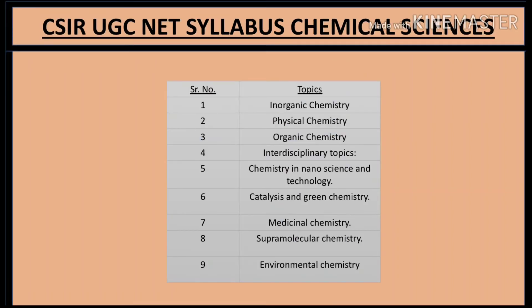For Chemical Sciences, the topics include: inorganic chemistry, physical chemistry, organic chemistry, and interdisciplinary topics such as nanoscience and technology, catalysis and green chemistry, medicinal chemistry, supramolecular chemistry, and environmental chemistry.